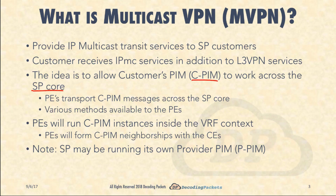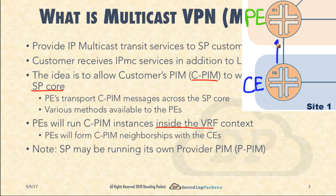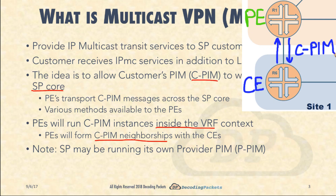The PEs will run CPIM instances inside the VRF context. Each PE, in addition to running a unicast routing protocol, will also be running CPIM inside the VRF. Because they are running CPIM inside the VRF, they will form CPIM neighbor relationships with their respective CEs. When you look at a 'show IP PIM neighbor' command inside the VRF, you will see the PE is adjacent to the CE, and then that signaling is transported across the SP core.